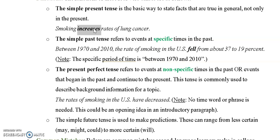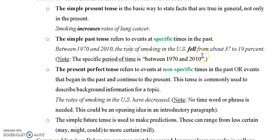If you use the simple past tense, it's because there are specific times in the past. The word 'specific' usually means there's some kind of date or time. For example: 'Between 1970 and 2010, the rate of smoking in the US fell from about 37 to 19%.' That specific phrase at the beginning tells us the time period, and that's a specific period of time.